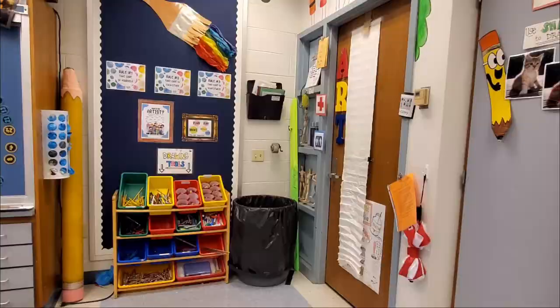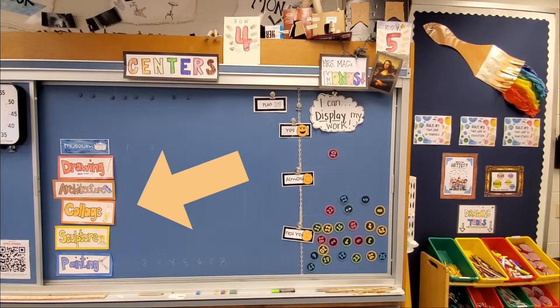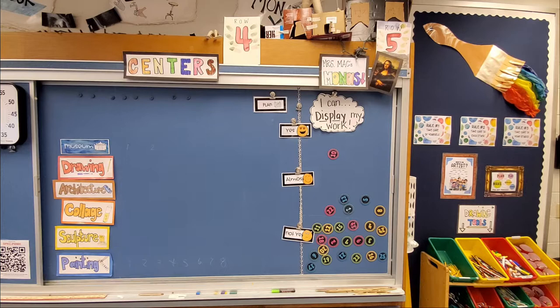This is my chalkboard, where I list the available centers each day and any maximum number of students per center. Right now painting is eight students max and my mini museum has two students max — I just write that with a chalk marker. Over here on the right-hand side we do self-assessments on the way out. We use art numbers to choose our center and also to self-assess at the end.